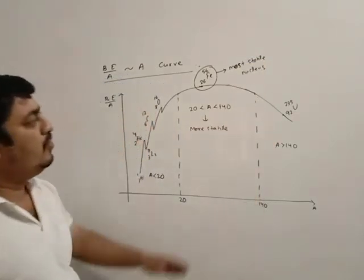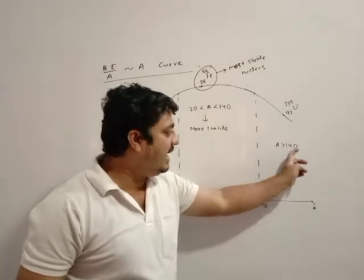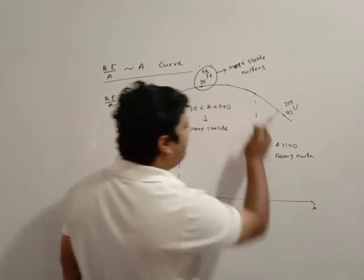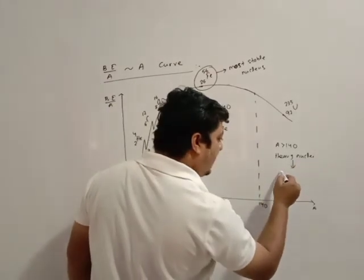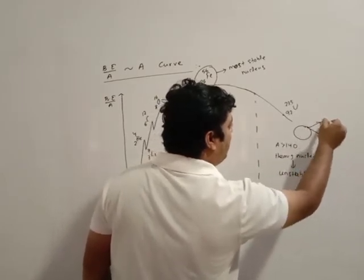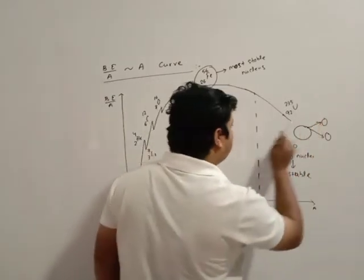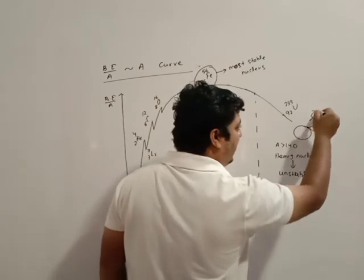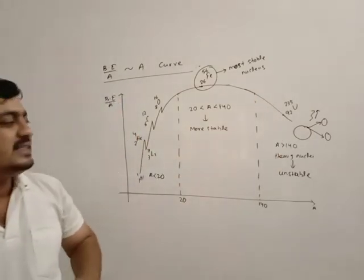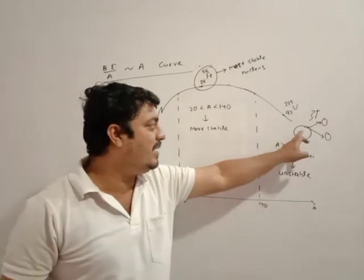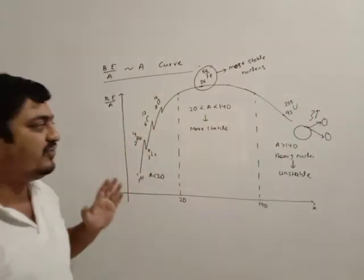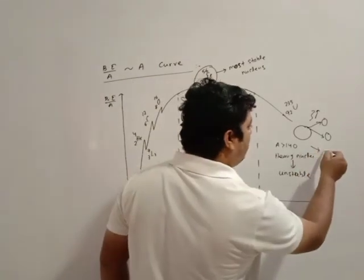For heavy nuclei when A is greater than 140, heavy nuclei have less binding energy per nucleon, so they are unstable. Hence, heavy nuclei split into lighter nuclei and become stable by emitting a large amount of energy. When A is greater than 140, the binding energy per nucleon decreases, so heavy nuclei are unstable, and a heavy nucleus splits into lighter nuclei and becomes stable by emitting large amount of energy. This process is called nuclear fission.